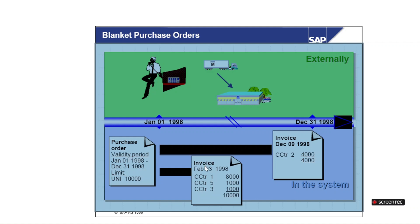Once we consume that material, we create an invoice directly. In a blanket purchase order, we don't create a goods receipt, we don't create a service entry sheet, we don't create any RFQ, and we don't create any contract or agreement. We directly create a blanket purchase order and then directly do the invoicing. For a single blanket purchase order, we can create invoices any number of times.